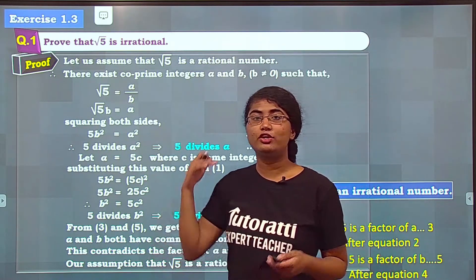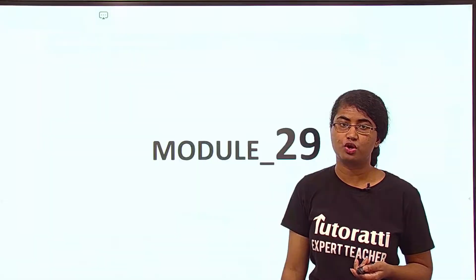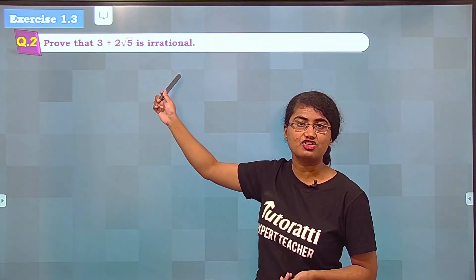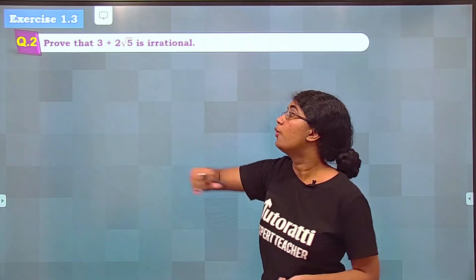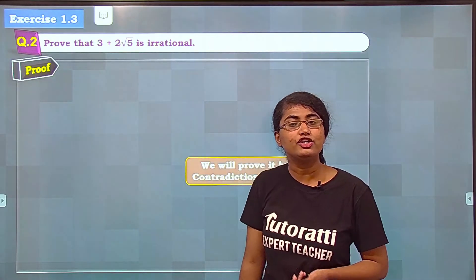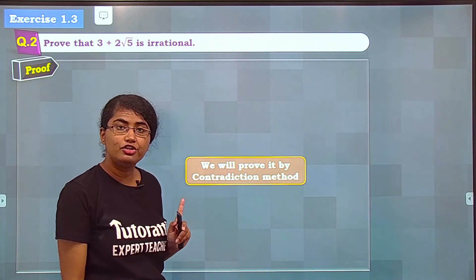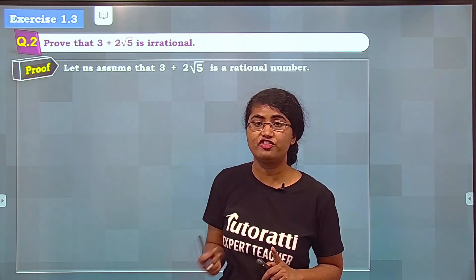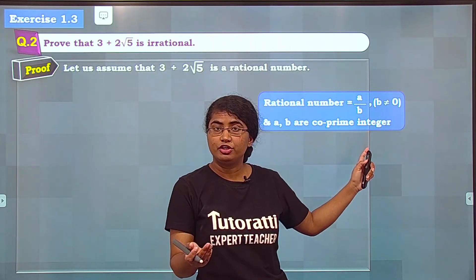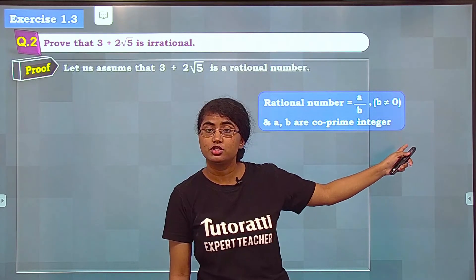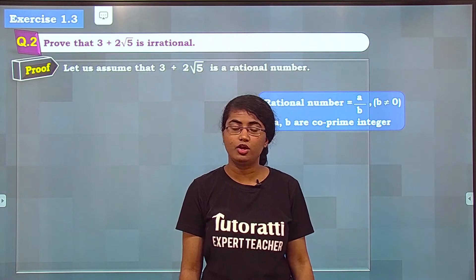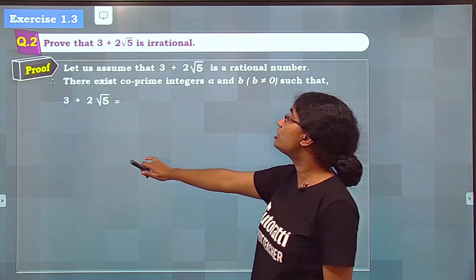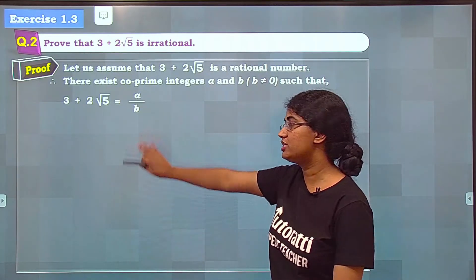Let's solve one more sum. The next question is: prove that 3 + 2√5 is irrational. When we have to prove a number irrational, we start with contradiction. Let us assume that 3 + 2√5 is a rational number. By definition of rational numbers, there exist co-prime integers A and B, where B ≠ 0, such that 3 + 2√5 = A upon B.